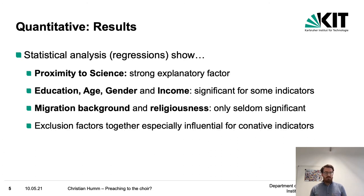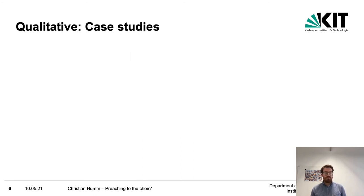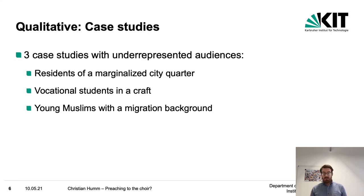Taken together, these exclusion factors are especially influential for conative indicators — that are indicators about doing something, like visiting a museum or going to a public lecture. To gain qualitative insight into the typology, we conducted three case studies with underrepresented audiences: residents of a marginalized city quarter, vocational students in a craft, and young Muslims with a migration background.